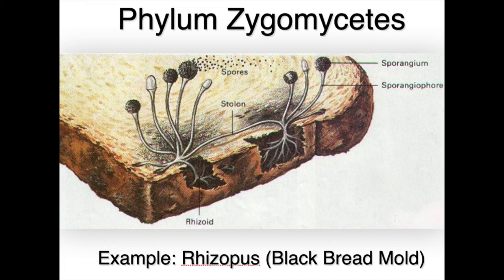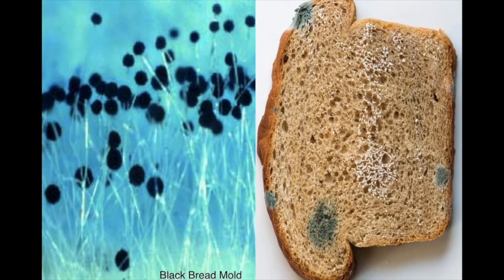The first phylum is Phylum Zygomycetes. An example of that is black bread mold, or Rhizopus. You can see the aerial hyphae, the spores, and the connection between them is called a stolon. Here's the black bread mold — you can see the hyphae, the little fibers, and then the black fruiting body or black sporangium.